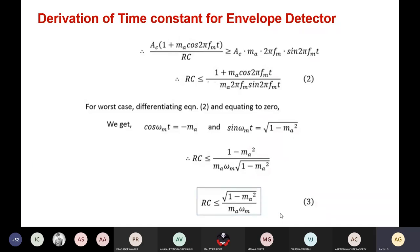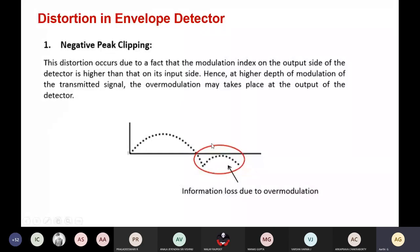Some distortions occur in the envelope detector. The first kind is called negative peak clipping, mainly due to over-modulation at the receiver end. This distortion occurs because the modulation index at the output side of the detector is higher than on the input side. Even if the modulation index is correct at the transmitter, if it is higher at the detector end, it leads to negative peak clipping and information loss.